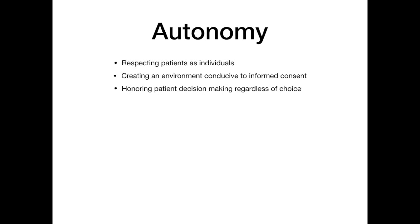The first one is autonomy. Autonomy refers to respecting patients as individuals. It requires that you create an environment that's conducive to informed consent. You're going to see the word informed consent pop up a lot in this lecture — it's actually going to be the second video in dirty ethics, so see the next video in this lesson series for more information about informed consent.